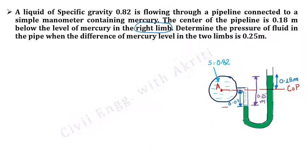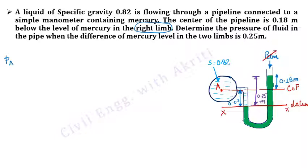Now let's draw the datum. This line represents my datum (line XX). All readings will be taken with respect to the datum. Now let's do the calculations. The equation will begin with PA. We know that above the right limb there is atmospheric pressure. Since the atmospheric pressure value is not given, we take it as equal to zero.